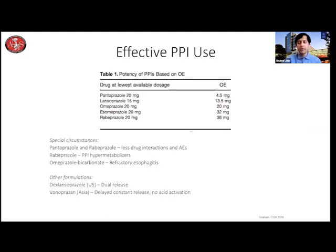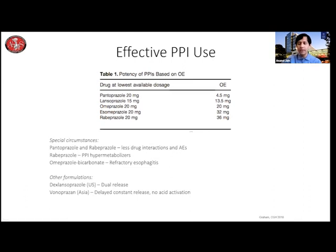On effective PPI use — all PPIs are not created the same. This chart shows the relative potency of various PPIs compared to omeprazole. Pantoprazole 20 mg is only equal to 4.5 mg of omeprazole — about 25% as effective. Esomeprazole (Nexium) and rabeprazole (Aciphex) are one and a half to two times more potent. So there is a meaningful difference in what PPI you're using, and it's important to know this when evaluating whether your PPI is effective.